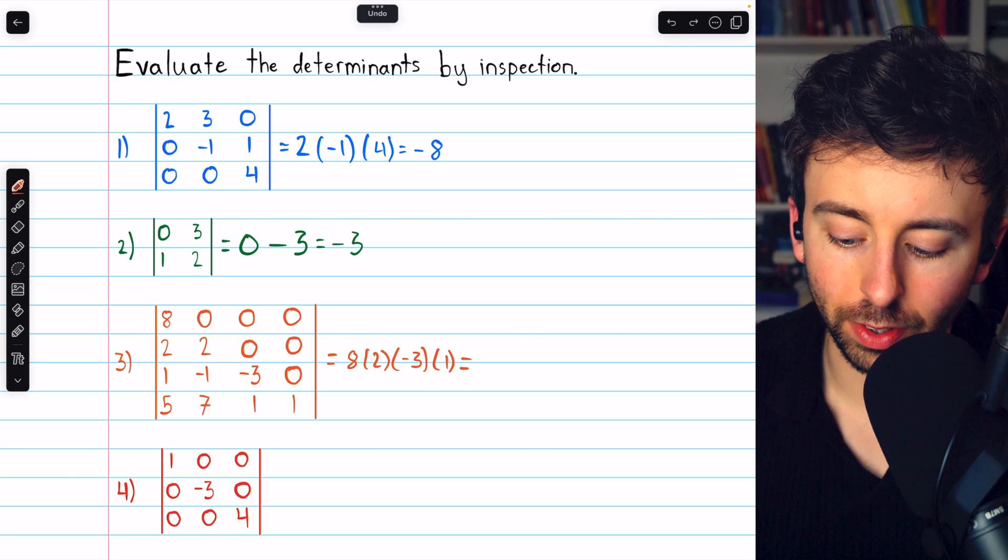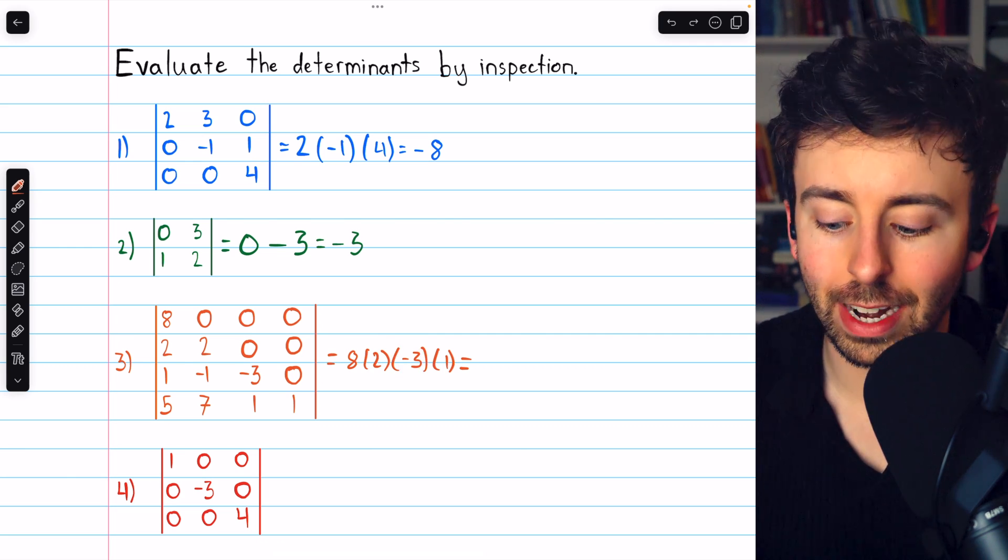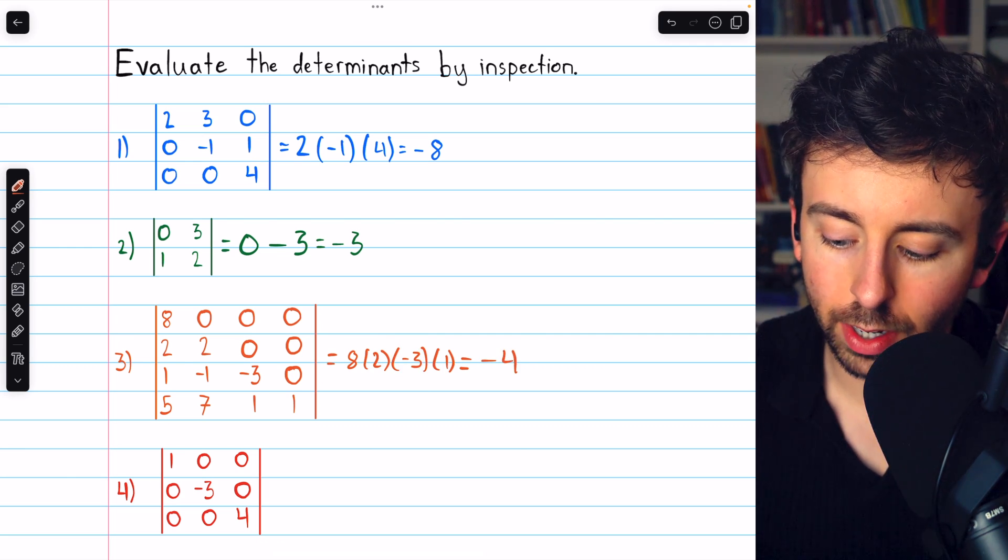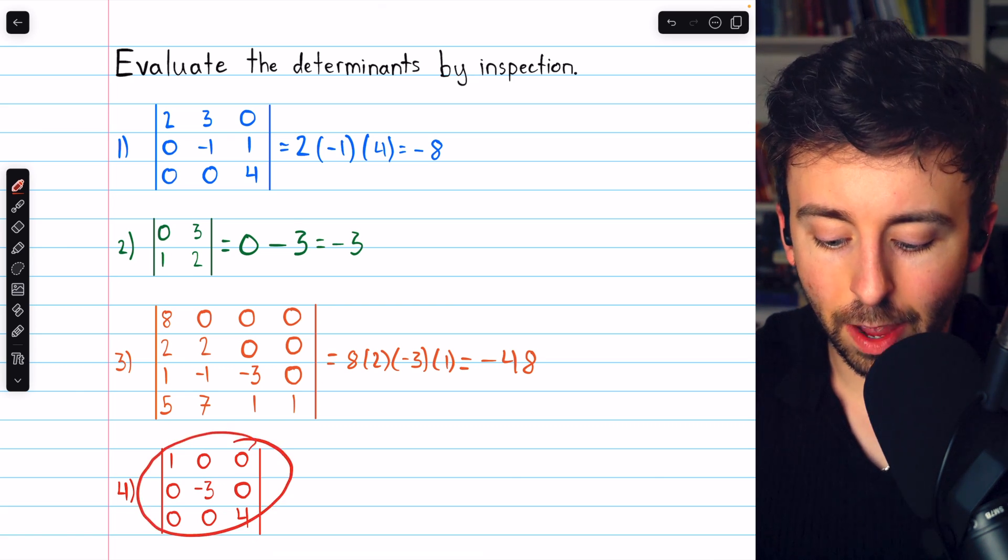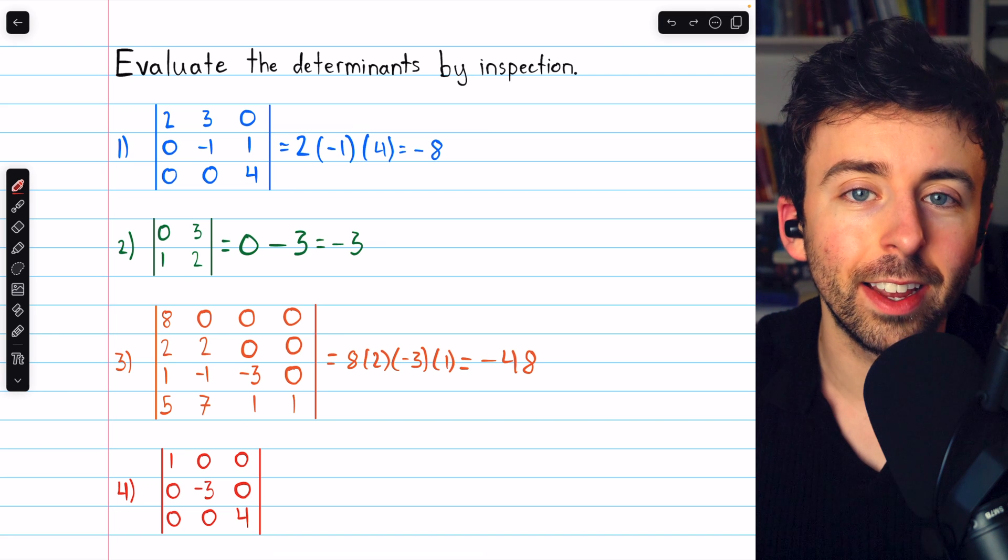This is 8 times 2 is 16, times negative 3 is negative 48, times 1 gives us our determinant of negative 48. This last example is a diagonal matrix, which is especially nice,